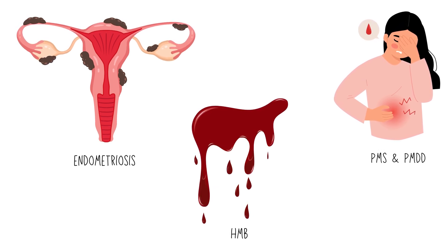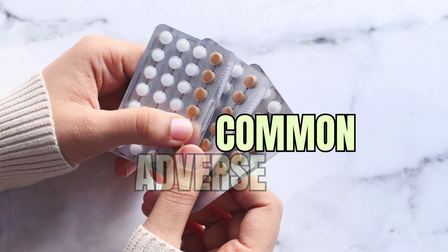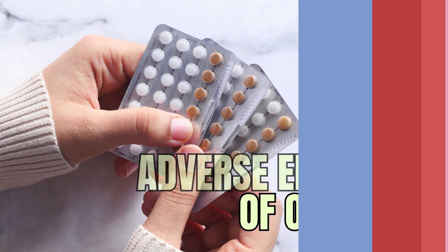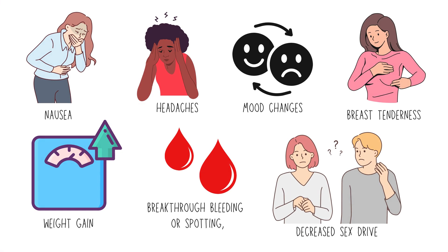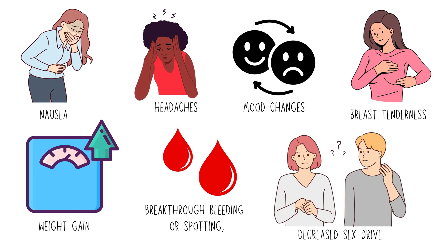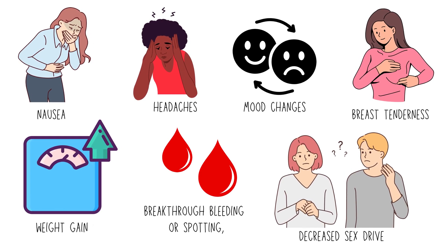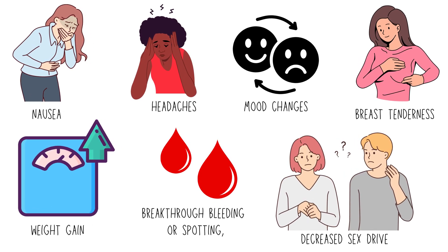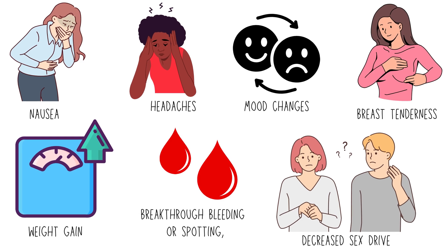In this video, our primary goal is to explore the common adverse effects of oral contraceptive pills. The most common ones include nausea, breast tenderness, headaches, mood changes, weight gain, breakthrough bleeding or spotting, and decreased sex drive.